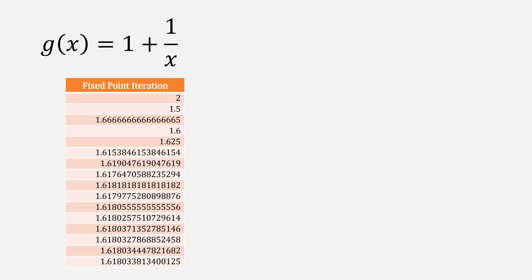In the case of 1 plus 1 over x, fixed-point iteration takes about 16 iterations to converge, and it does so oscillating, which means we'll take a q between 0 and 0.5.